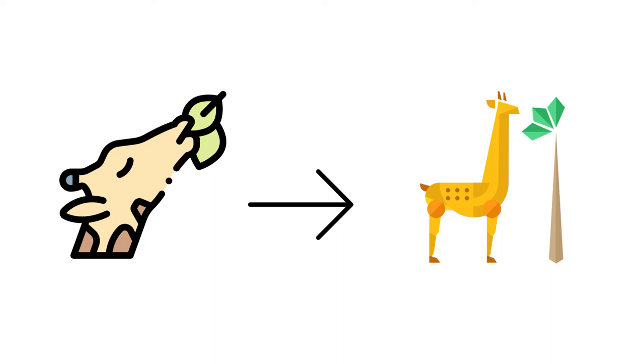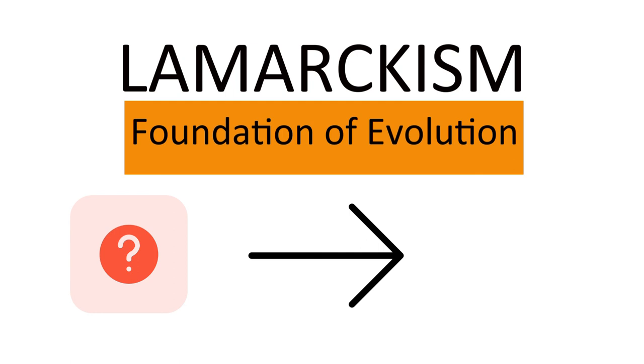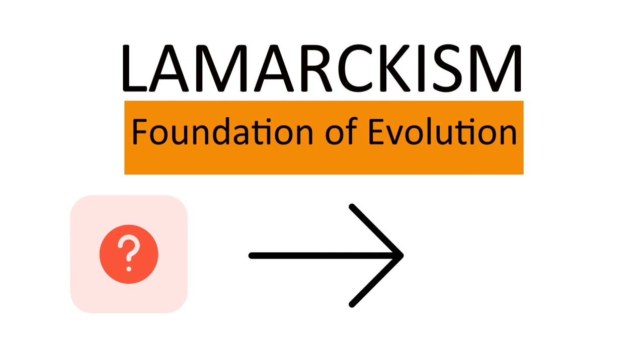Since they used their necks very often, their long necks got propagated and stabilized as a permanent character in the course of evolution. This was the basic idea of Lamarckism, which eventually turned out to be obsolete as Darwin came along and gave his natural selection theory. But one thing that Lamarck did was to lay the foundation of evolution, and he also came up with the idea that something is getting propagated from one generation to another — which we today know as genes.